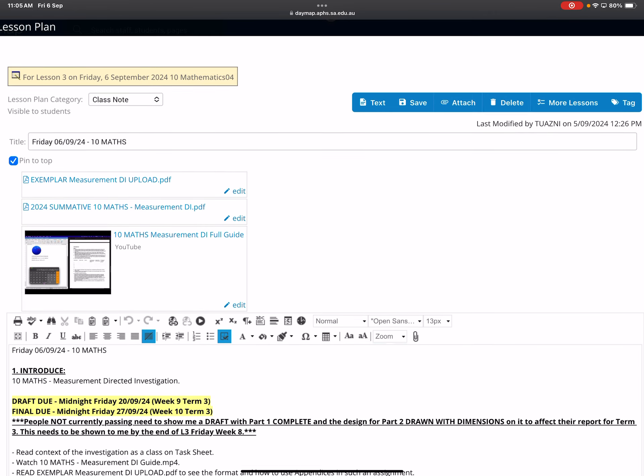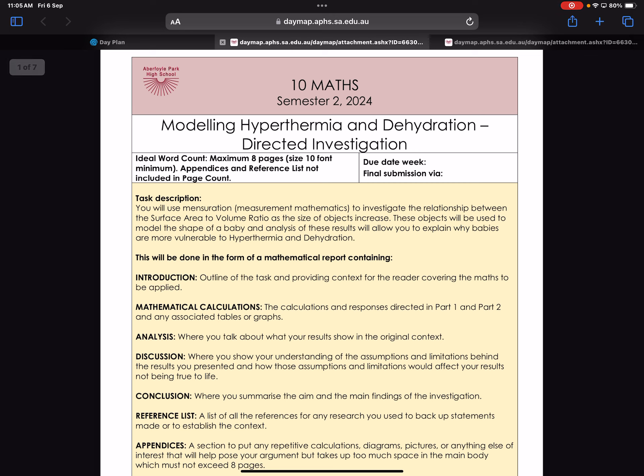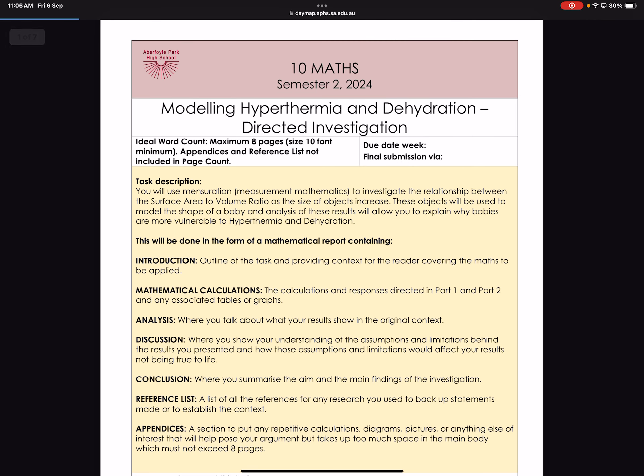Let's look at the task sheet. I will read out the task description. You will use mensuration. Now, that sounds very similar to another word that girls will be familiar with, but mensuration is measurement maths. And we're going to use it to investigate the relationship between the surface area of something, so the outside area, like my skin, versus volume ratio, which is how much space I take up. As things increase in size.